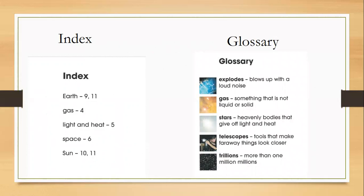The glossary is also usually in the back of the book and helps you learn what unfamiliar words mean. This glossary was from a book about planets and the solar system. For example, the word 'explodes' — some of us might not know what that means. If I look it up in the glossary, it says 'blows up with a loud noise.' Now I know what the word means and I can go back to reading. The glossary is really helpful for understanding words you don't know.